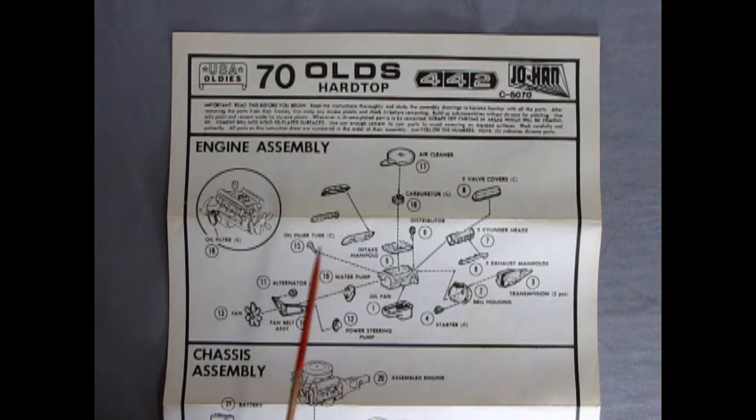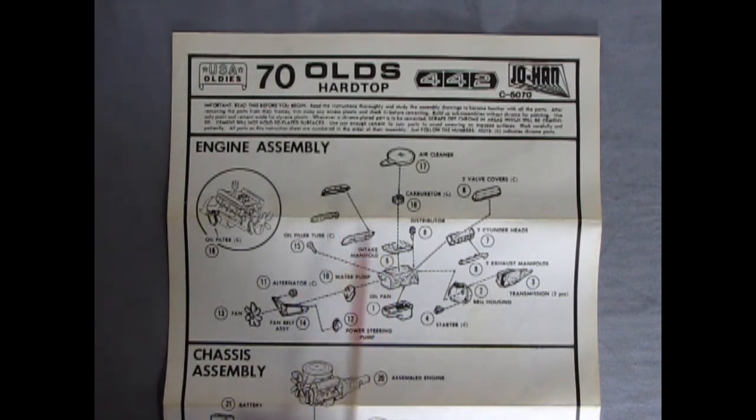What I like about this kit is the 70, 71 and 72 Oldsmobile hardtops were all the same body style. The only thing that really changed was the grills and the side marker lights and things like that. Although actually I don't think the marker lights changed, but the front and rear grill and tail lights those changed for sure.